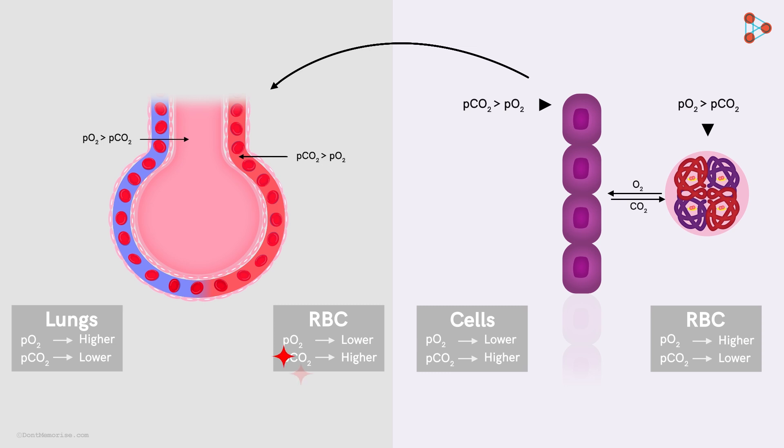Now, the partial pressure of carbon dioxide is higher than that of oxygen in the RBCs in contrast to the cells as seen earlier. And the partial pressure of oxygen is lower in the RBCs compared to the lungs. So the exchange and complex formation takes place once again.